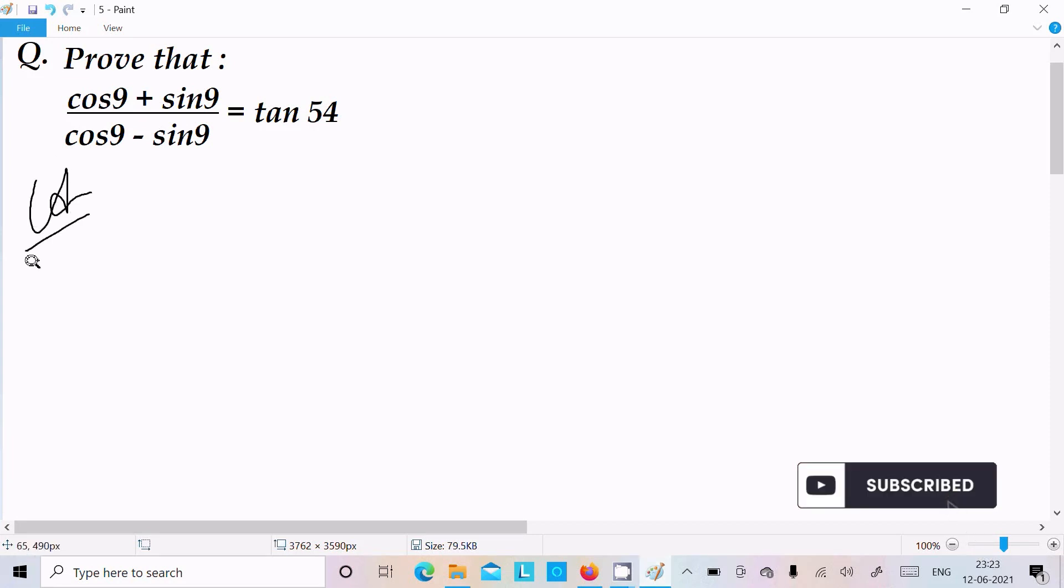So let's see the answer. Here I'm going to take the RHS, right hand side. On the RHS tan54 is there, so tan54 we can write as tan(45 plus 9), so if you add it's equal to 54.